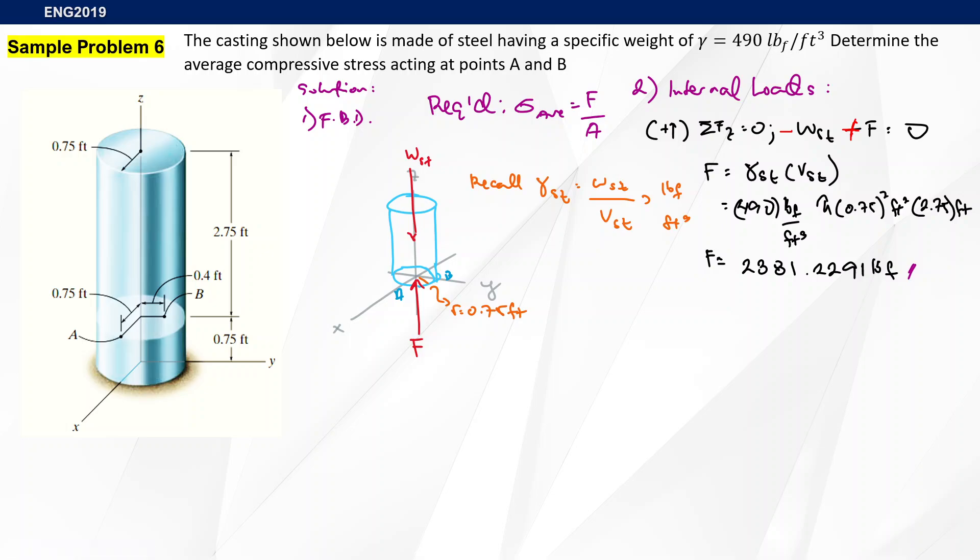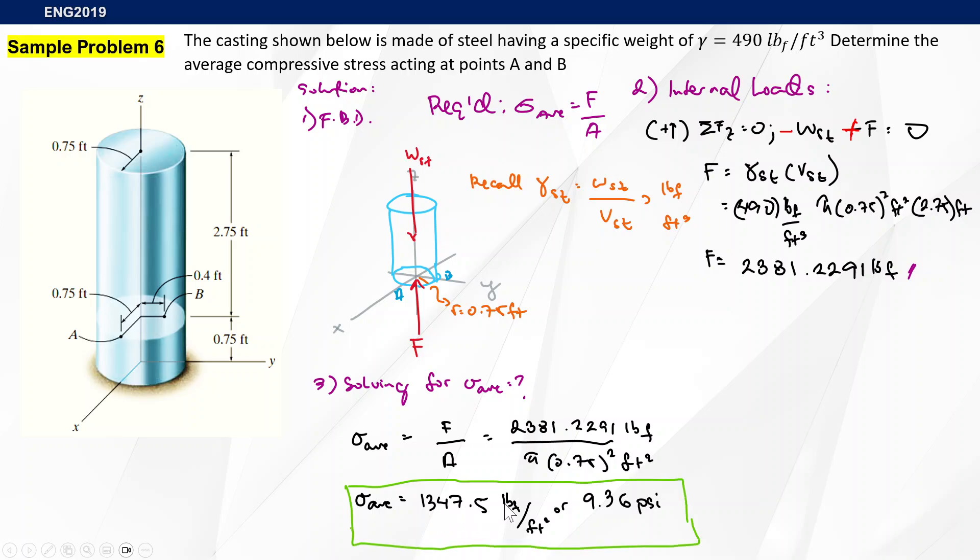Finally, we can now solve for our average compressive stress. We will have this particular equation, which is F over A. That is 2381.229 pound force divided by cross-sectional area, which is pi times 0.75 squared feet squared, which gives around 1347.5 pound force per square foot, or 9.36 PSI. I got that by dividing it by 144 to convert pounds per square foot to pounds per square inch.